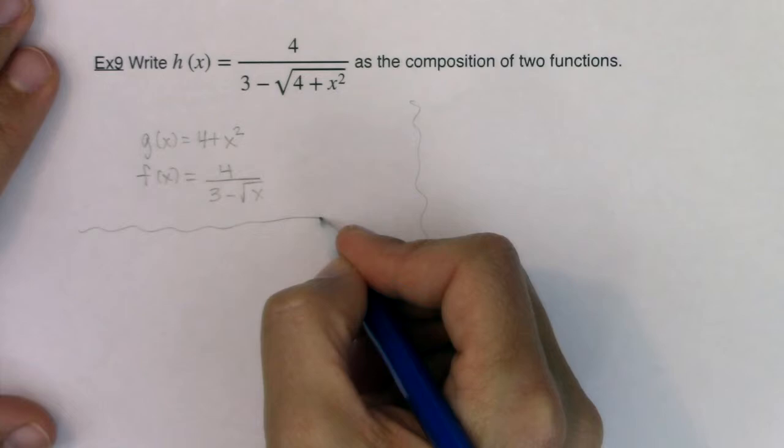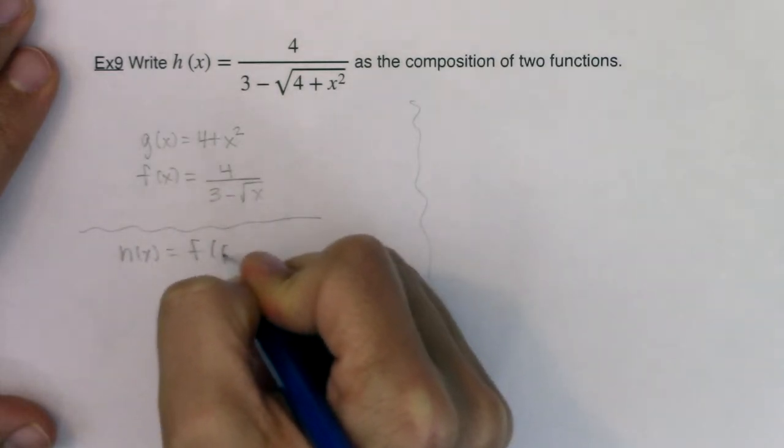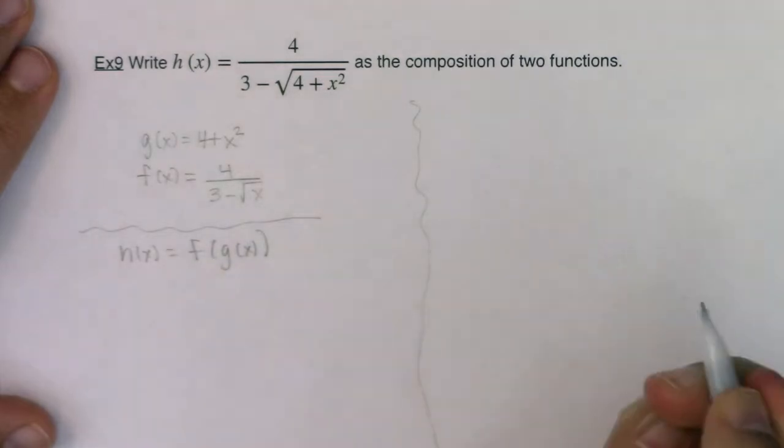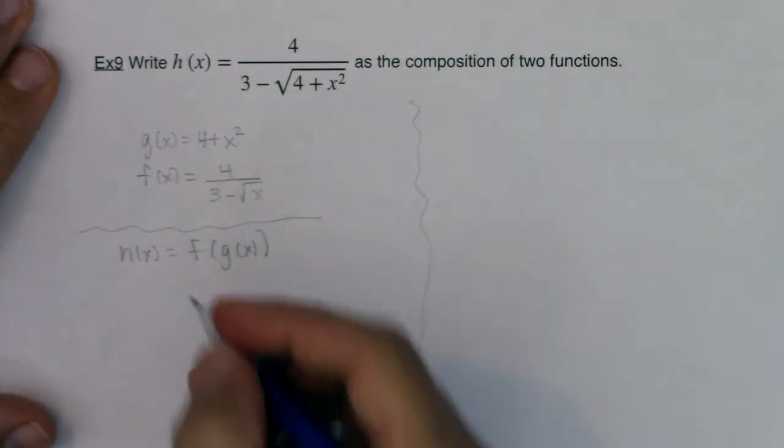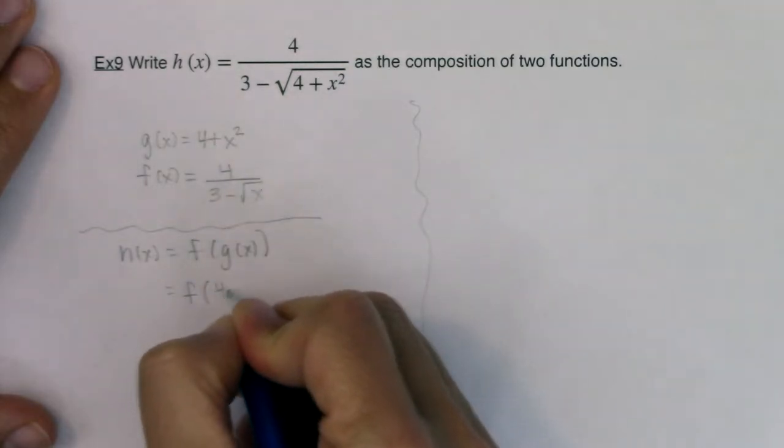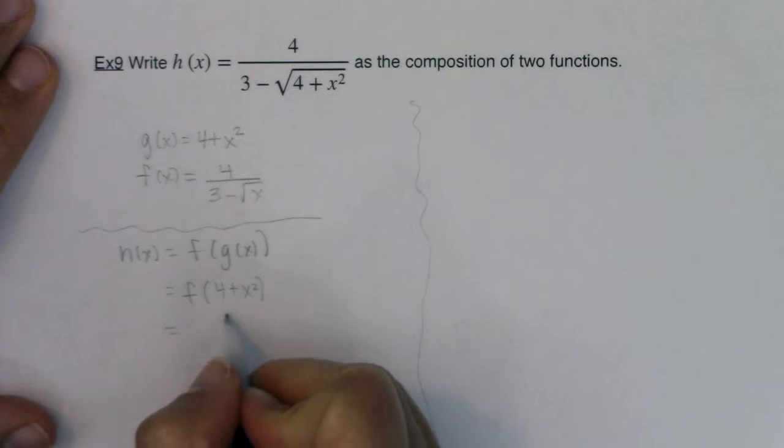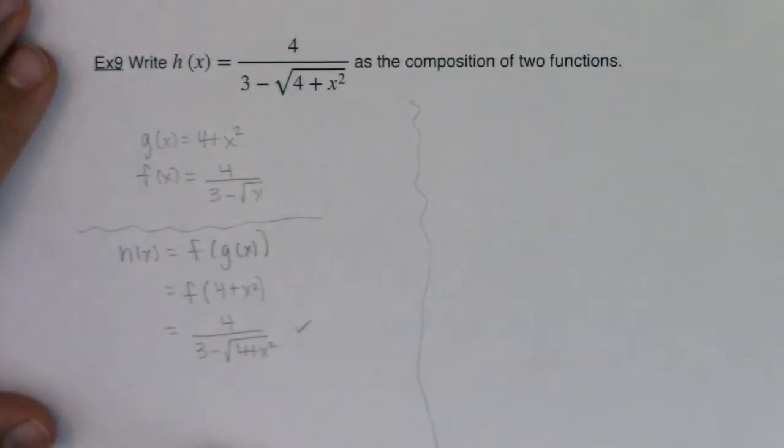So let me define h of x to be f of g of x. And let's see if this works. So this would be f of 4 plus x squared. And if I do that, that should then turn into, well, I will have 4 up top and 3 minus the square root of 4 plus x squared. That works. So that's one option.